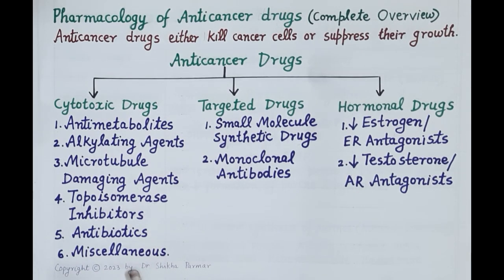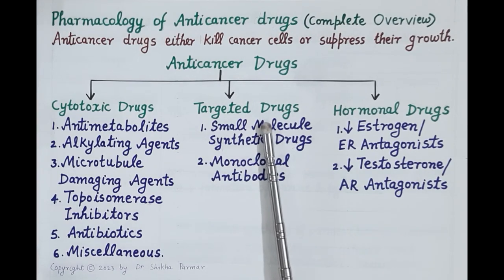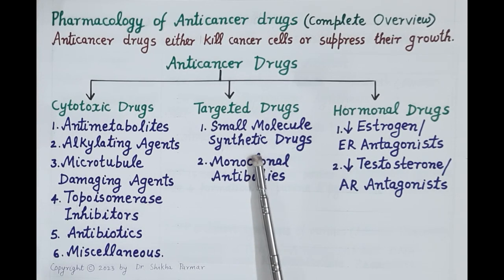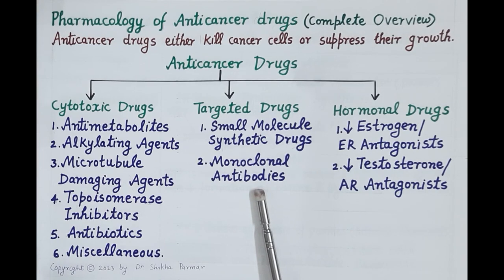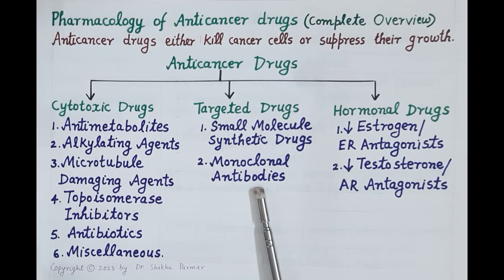There are also some miscellaneous drugs. Targeted drugs specifically target and destroy cancer cells with minimal effect on normal cells. Targeted drugs primarily include two categories: small molecule synthetic drugs that enter inside the cells and target proteins like tyrosine kinase that is overexpressed in cancer cells, and monoclonal antibodies that act on the surface of cancer cells. They bind to specific unique antigens expressed on the surface of cancer cells so that these agents highlight those cancer cells, which are then easily identified and destroyed by the immune cells of the body.